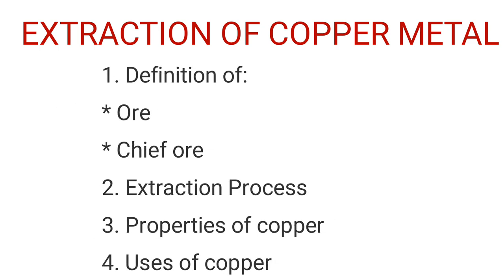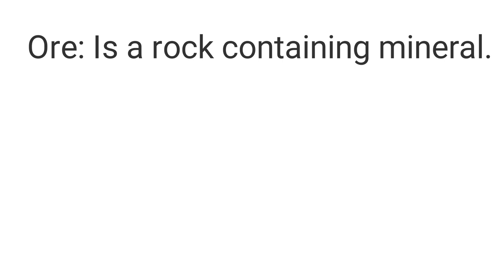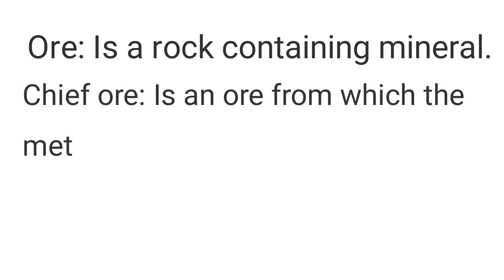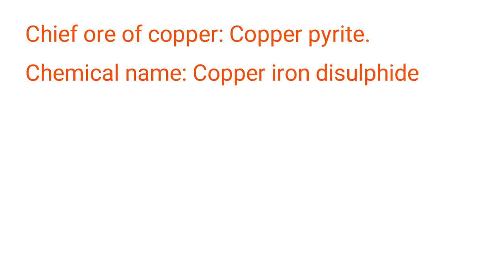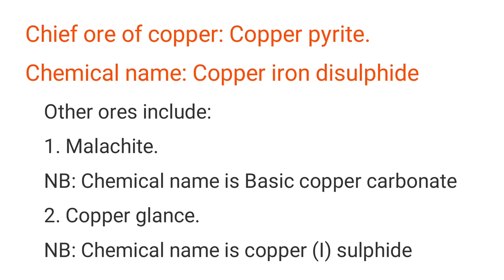First, a definition of an ore and chief ore. Second, the extraction process. Third, properties of copper, and finally uses of copper. An ore is a rock which contains the mineral. A chief ore or main ore is an ore from which the metal can be obtained on a commercial scale. The main ore used in extraction of copper is copper pyrite — the chemical name is copper iron disulfide. Other ores include malachite (basic copper carbonate) and copper glance (copper one sulfide).